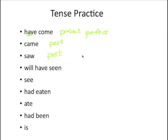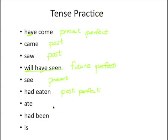'Will have seen' — future perfect. We have our auxiliary 'will' for future, and our auxiliary 'have' for perfect, so the entire verb is 'will have seen.' 'See' — just present. 'Had eaten' — past perfect. 'Ate' — past. 'Had been' — past perfect. And 'is' — present, specifically the present tense third person singular of our most irregular verb, 'to be.'